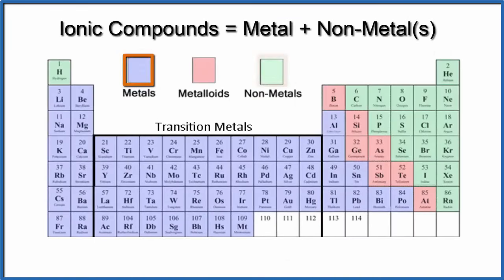Ionic compounds are made up of a metal and a nonmetal, or a metal and a group of nonmetals.